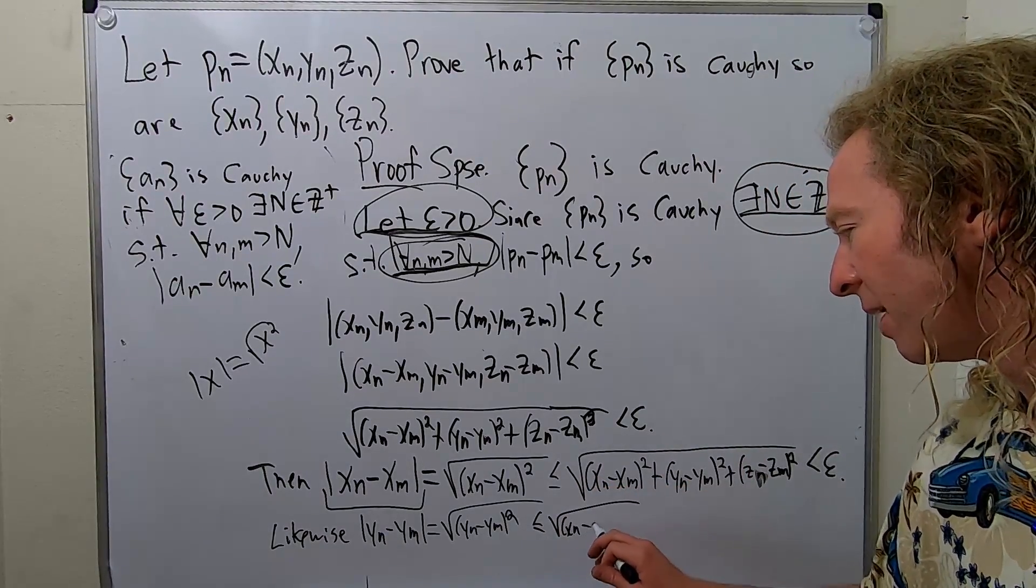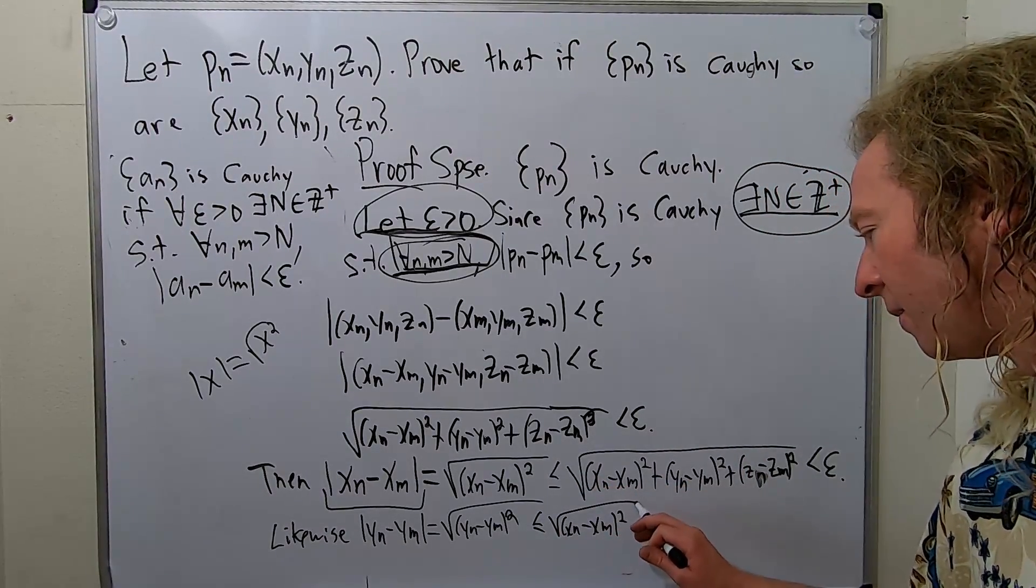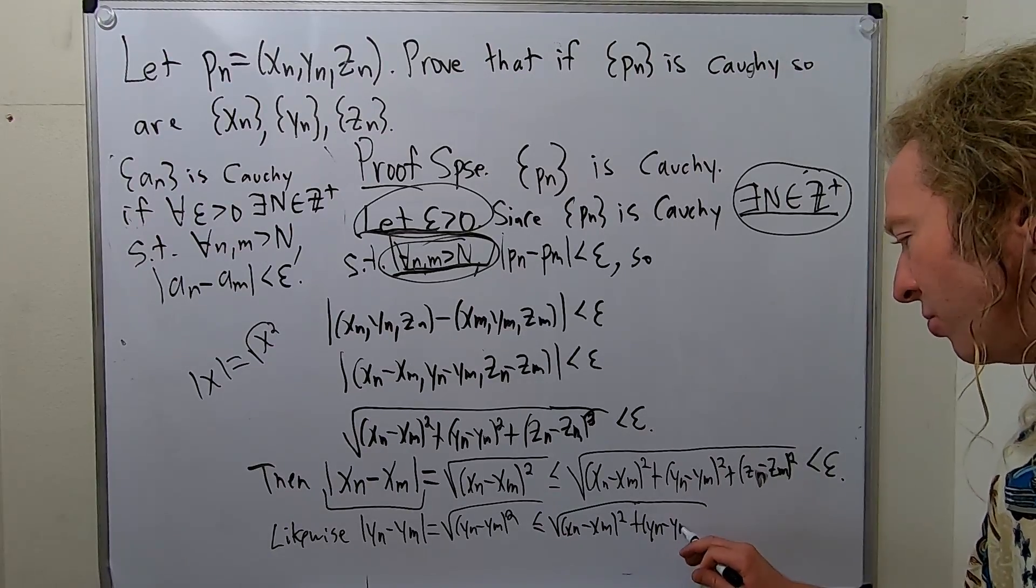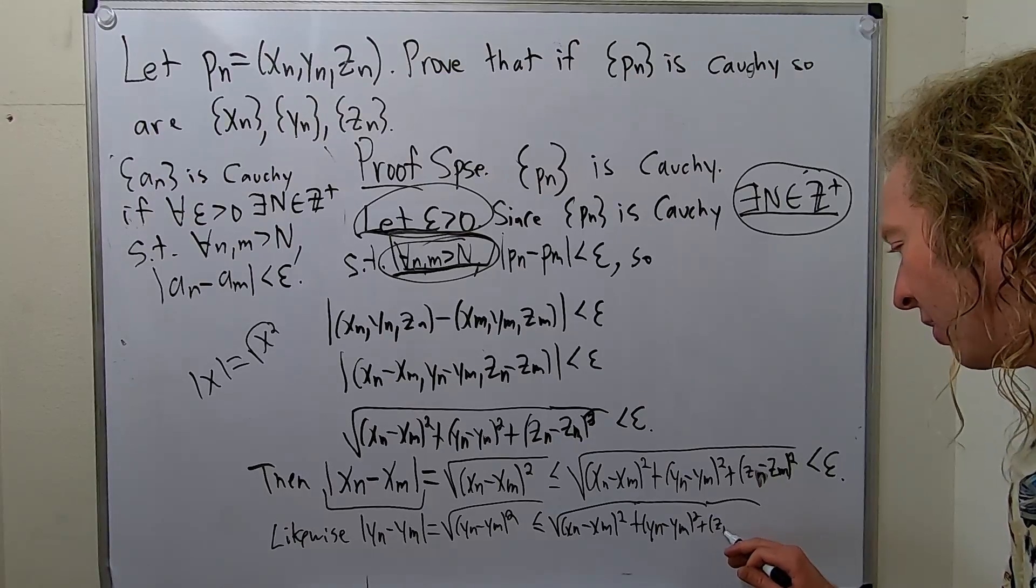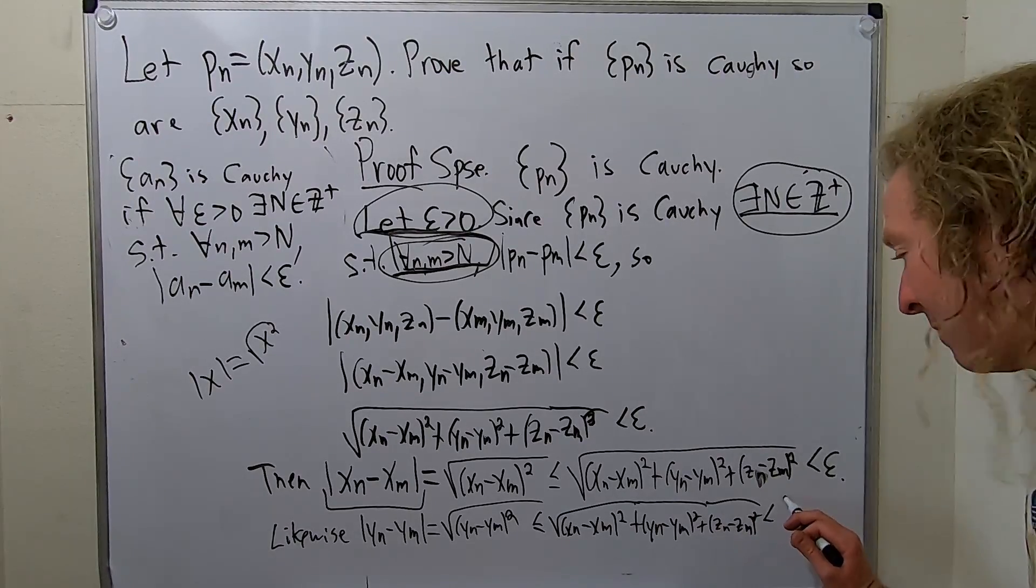X sub n minus X sub m squared plus Y sub n. Just adding terms. And you can add terms. They're positive or zero. So this inequality will certainly be true. And that is less than epsilon.